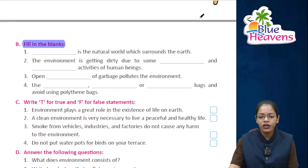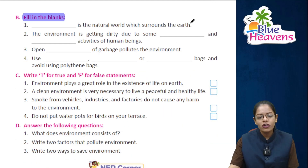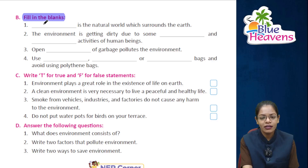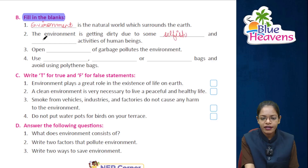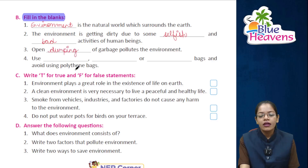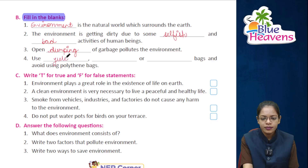Exercise B — fill in the blanks. First: dash is the natural world which surrounds the earth — answer: Environment. Second: The environment is getting dirty due to some dash and dash activities of human beings — answer: bad and selfish. Third: Open dash of garbage pollutes the environment — answer: dumping. Fourth: Use dash, dash, or dash bags and avoid using polythene bags — answer: jute, cloth, or paper bags.